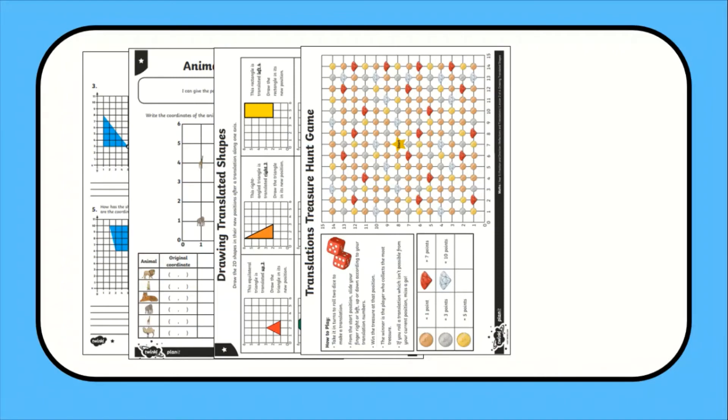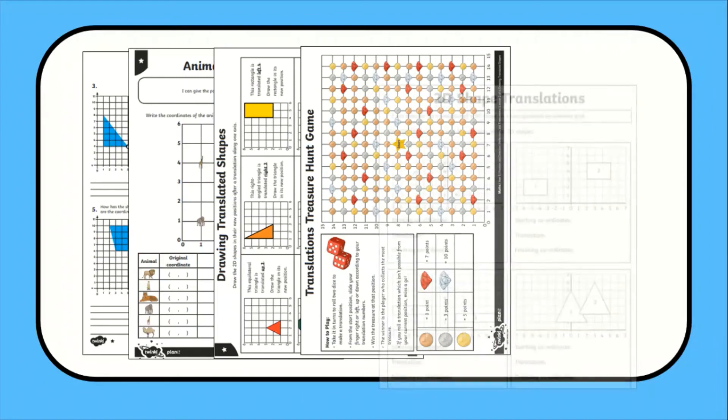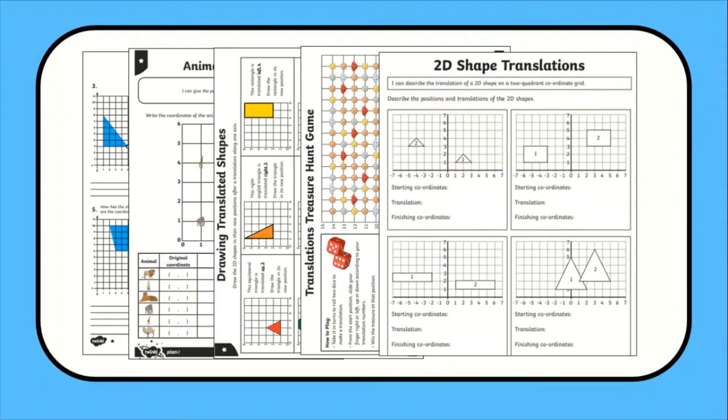From games to worksheets, one quadrant to four, translate the shape or identify the translation, Twinkle has a resource for every age and learning objective. They are differentiated using the star system and come with handy answer sheets.